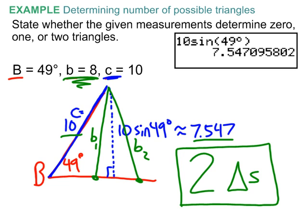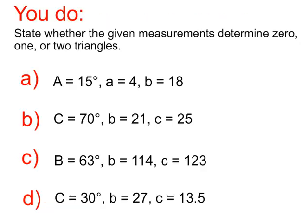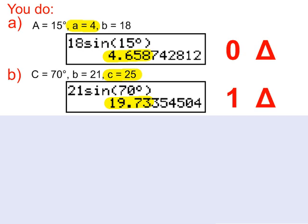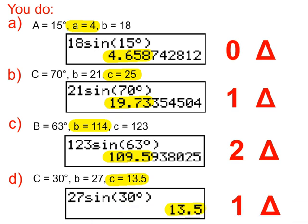I hope that made sense. If not, come by office hours. Here are several practice problems — please pause the video and give them a shot. The first two solutions: zero triangles for the first, one triangle for the second. Review those if needed, then check c and d. The answers are two triangles and one triangle respectively. Come by if it didn't make sense.